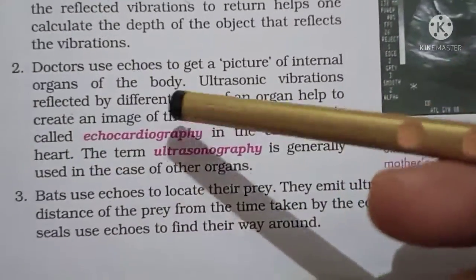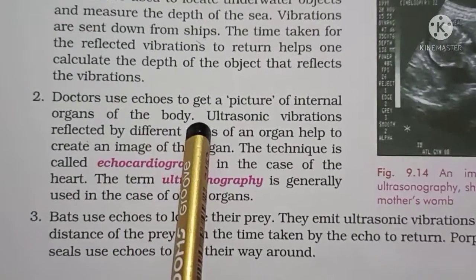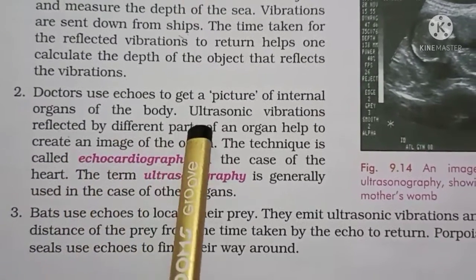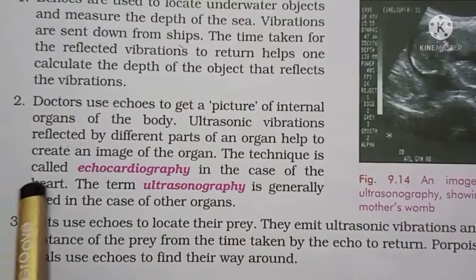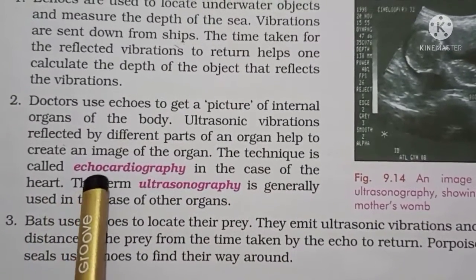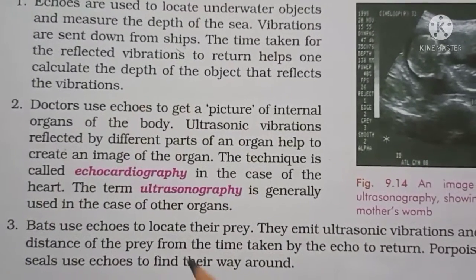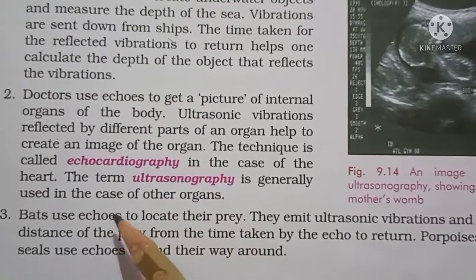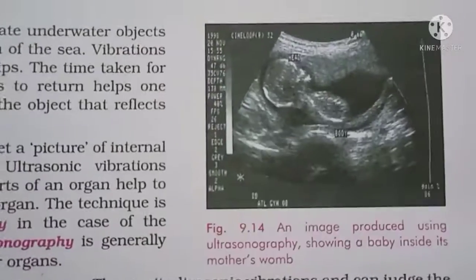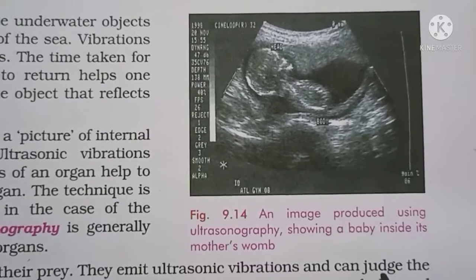Doctors use ultrasonic vibrations to get a picture of the internal organs of the body. Ultrasonic vibrations reflected by different parts of an organ help to create an image of the organ. This technique is called echocardiography when done for the heart, and ultrasonography when done for other organs of the body. An image produced using ultrasonography can show a baby inside the mother's womb.